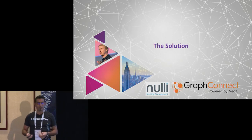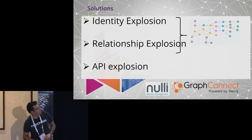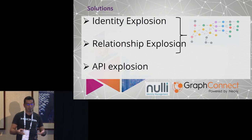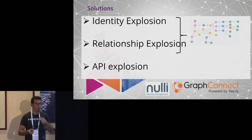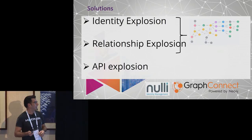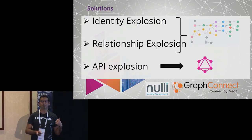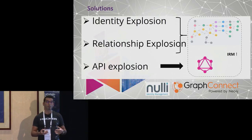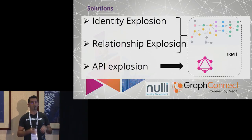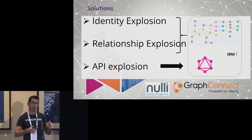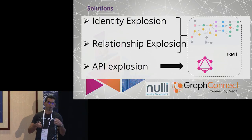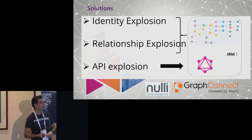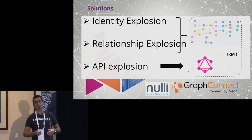We propose that graphs provide an elegant solution to our identity and relationship explosion. I don't have to convince you of that — I usually need to convince my identity counterparts. As for the API explosion, we propose that GraphQL will help. Together, these tools can be used in identity and access management to implement true identity relationship management, or IRM. There's been quite a bit of failure before with IRM, but we think that using graphs will really provide a solution.